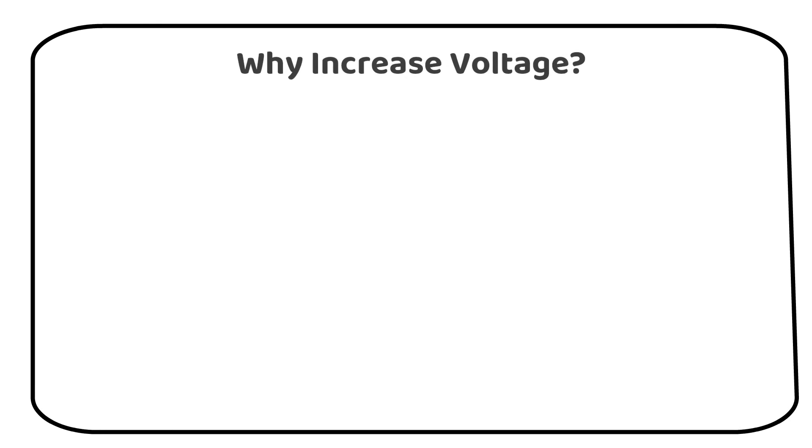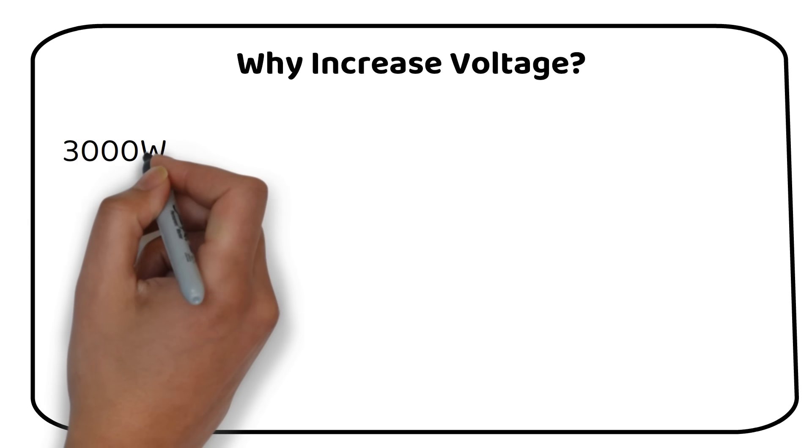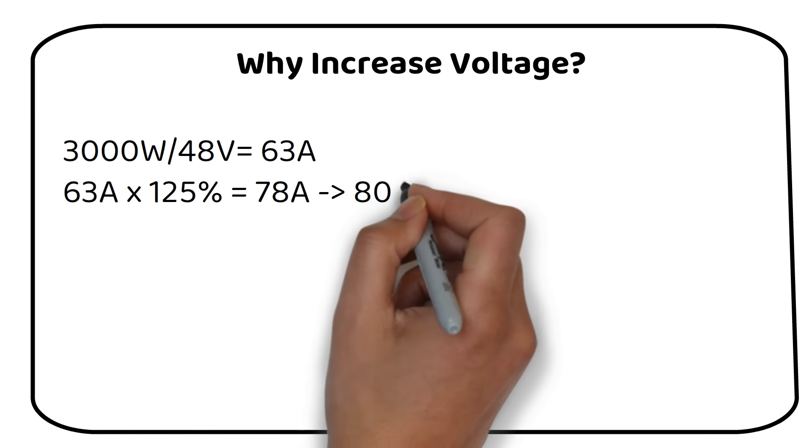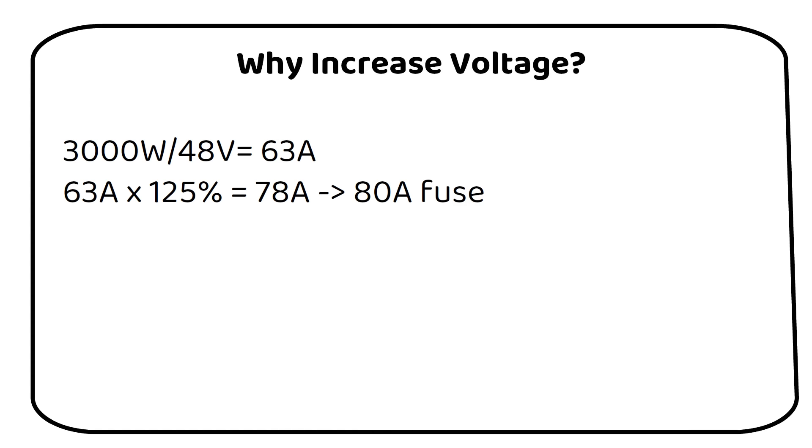I will calculate it for a 3000 watt inverter. We divide 3000 watts by 48 volts to become 63 amps. We then have to multiply by a safety factor of 125% to become 78 amps. We need to use an 80 amp fuse. This is under 100 amps, so this is ok.